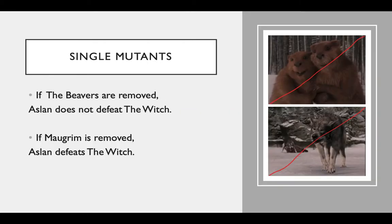Now I'm going to talk about single mutants. For the first one, if the beavers are removed, Aslan does not defeat the witch. Because if the beavers aren't there, they cannot activate the Pevensey children, which means Mogrim will intercept Aslan, and so Aslan cannot defeat the witch. For the second one, if Mogrim is removed, Aslan defeats the witch, because Mogrim cannot intercept Aslan, and then Aslan can block the witch.